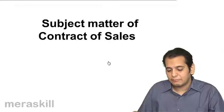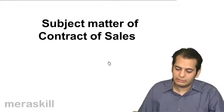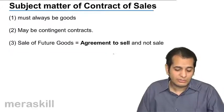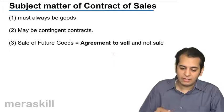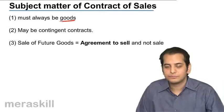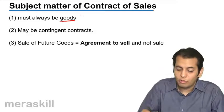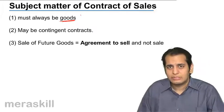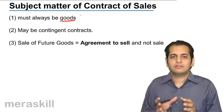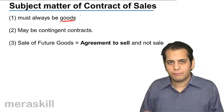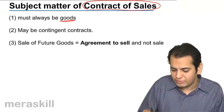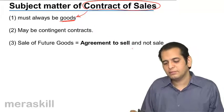The next topic is subject matter of contract of sale. The subject matter of contract of sale has three points. The first point is that the subject matter is goods — what do you sell? You always sell goods. So the subject matter, the essence, the thing that you sell is always goods. The subject matter of a contract of sale will always be goods.